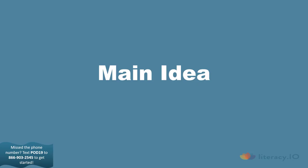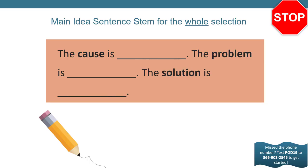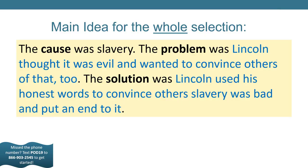Welcome back. It's time for us to use our text structure to write our main idea sentences. The text structure of this passage is cause, problem, and solution. So we'll use the sentence stems: the cause is, the problem is, the solution is. Pause your video and text in your main idea sentences to the survey now. Here's what I wrote for my main idea sentences: The cause was slavery. The problem was Lincoln thought it was evil and wanted to convince others of that too. The solution was Lincoln used his honest words to convince others slavery was bad and put an end to it. How does yours compare?